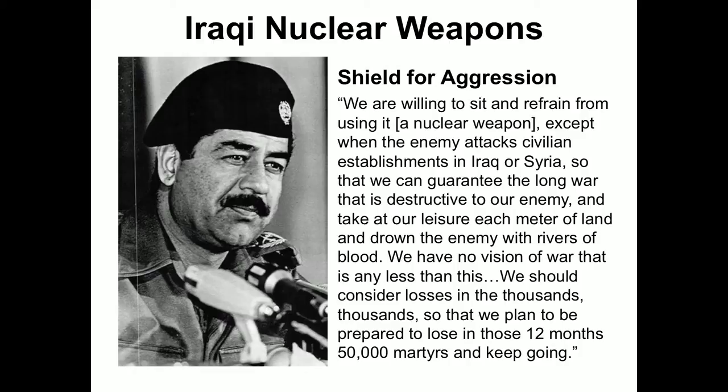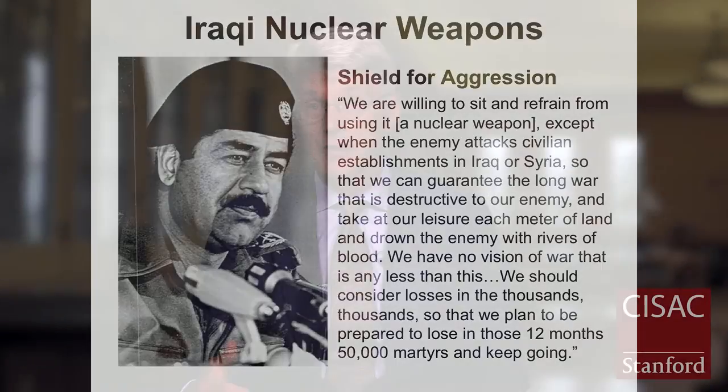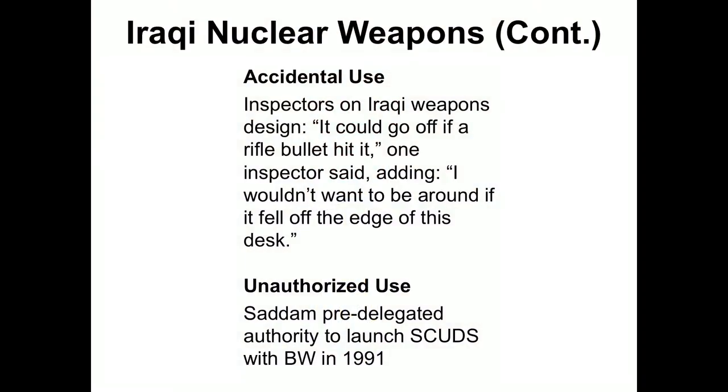He considered losses in the thousands — planning to be prepared to lose 50,000 martyrs in 12 months and keep going. Saddam Hussein didn't think he could conquer all of Israel with nuclear weapons, but did think they were a shield under which Israel could not escalate while Iraq attacked with conventional forces and occupied territories.